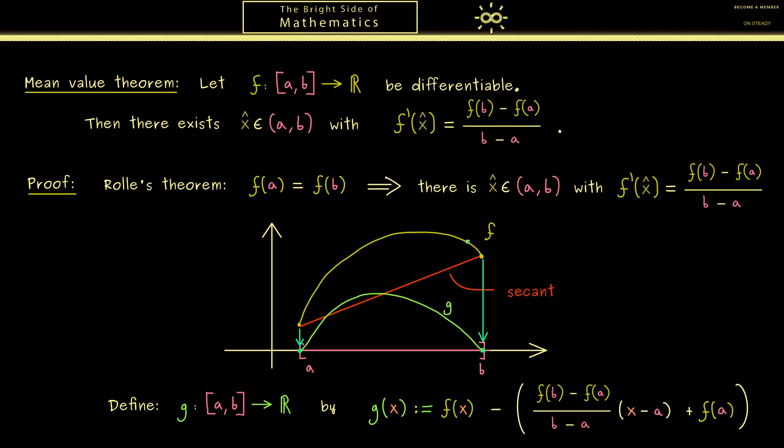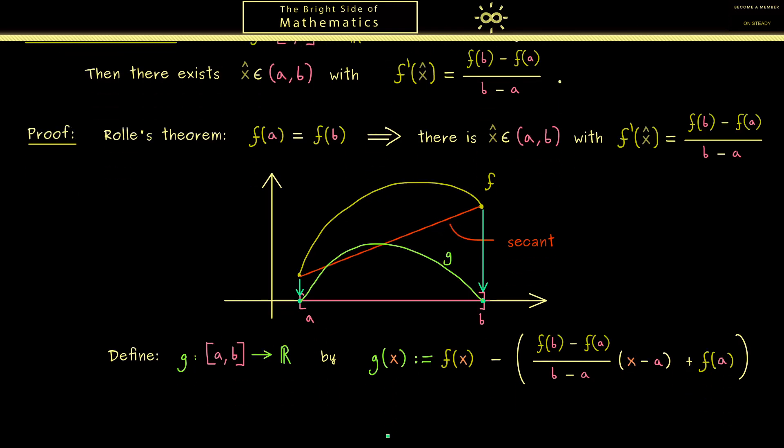Now the definition we described in the picture is here given in this formula. Which is exactly what we wanted: the function f minus the secant. So here we have the constant slope times (x - a) plus f at this point a. And of course here a is the left bound of the interval. Because g is still differentiable we can calculate the derivative. Of course you can apply the sum rule so we have f' minus the slope of the secant. So here you see we are already very close to the mean value theorem.